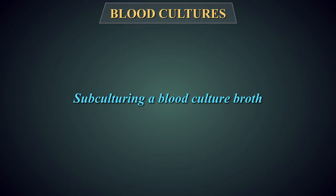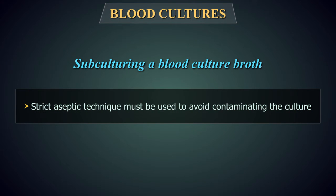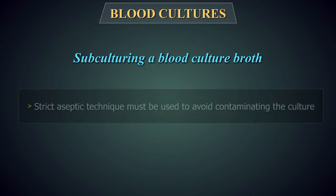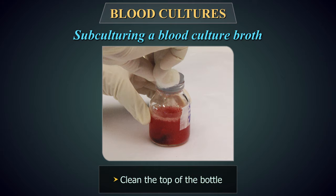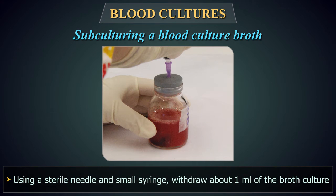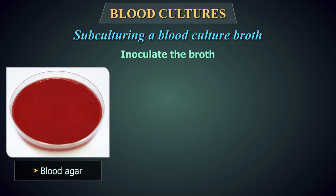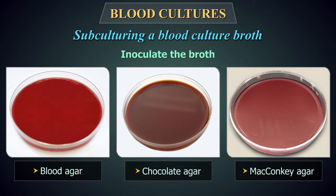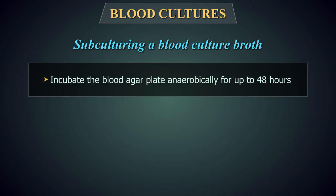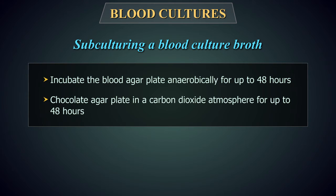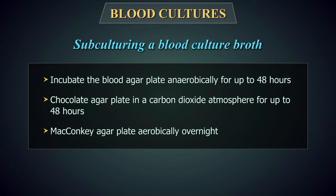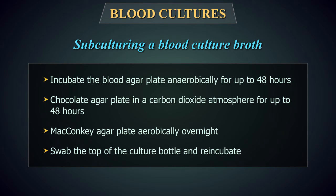Subculturing a Blood Culture Broth: A strict aseptic technique must be used to avoid contaminating the culture. Clean the top of the bottle using an ethanol ether swab. Using a sterile needle and small syringe, insert the needle through the rubber liner in the cap and withdraw about 1 ml of the broth culture. Inoculate the broth on blood agar, chocolate agar, and MacConkey agar using the streak plate method. Incubate the blood agar plate anaerobically for up to 48 hours, the chocolate agar plate in a carbon dioxide atmosphere for up to 48 hours, and the MacConkey agar plate aerobically overnight. Swab the top of the culture bottle and re-incubate.